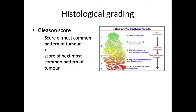The tumour is graded using the Gleason scoring system, where a low-grade, well-differentiated tumour is given a low score, and a high-grade, poorly-differentiated tumour is given a high score. This score is given to the primary grade and to the secondary grade, with each grade being given a score of between 1 and 5, resulting in an overall score from 2 to 10.